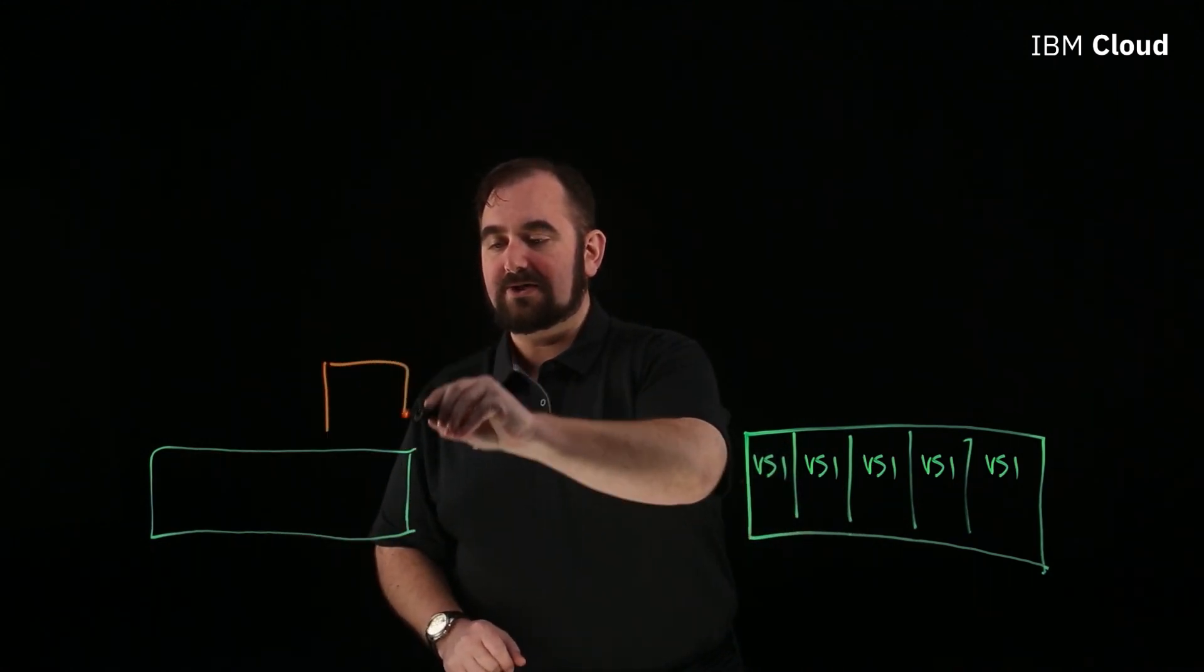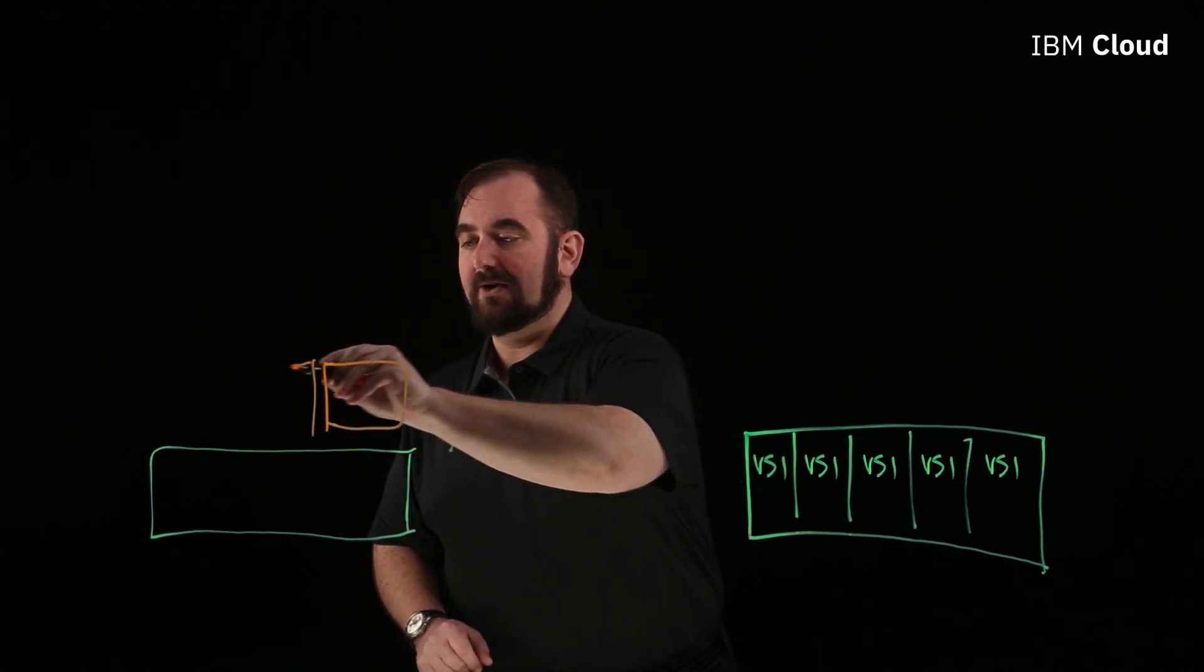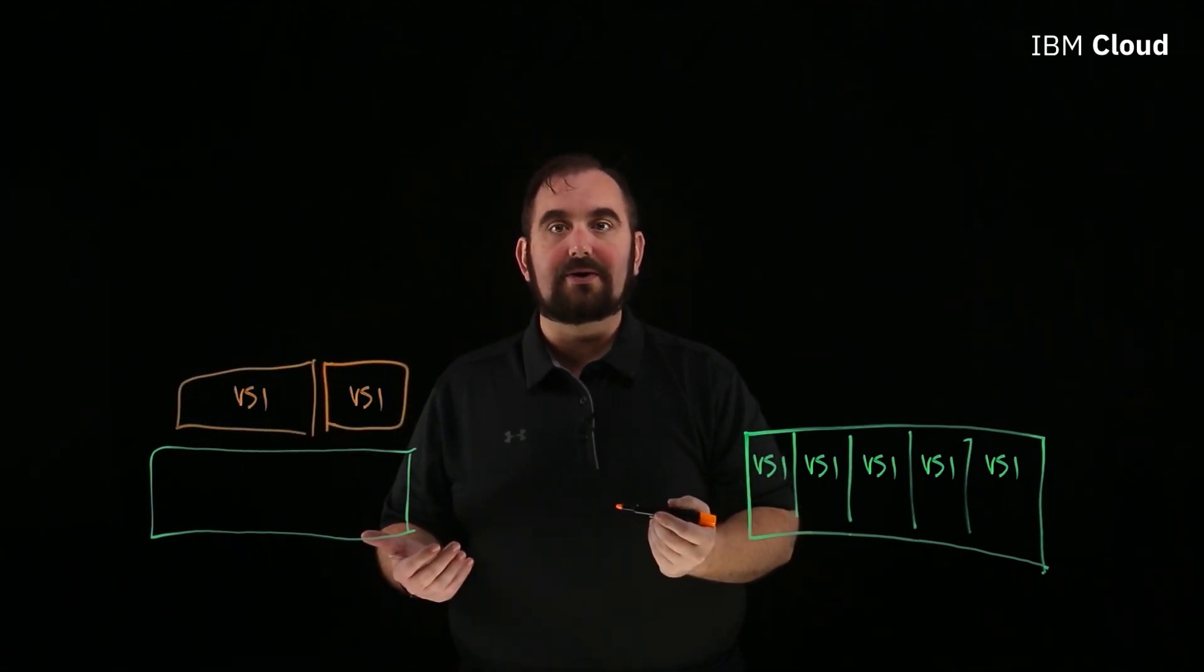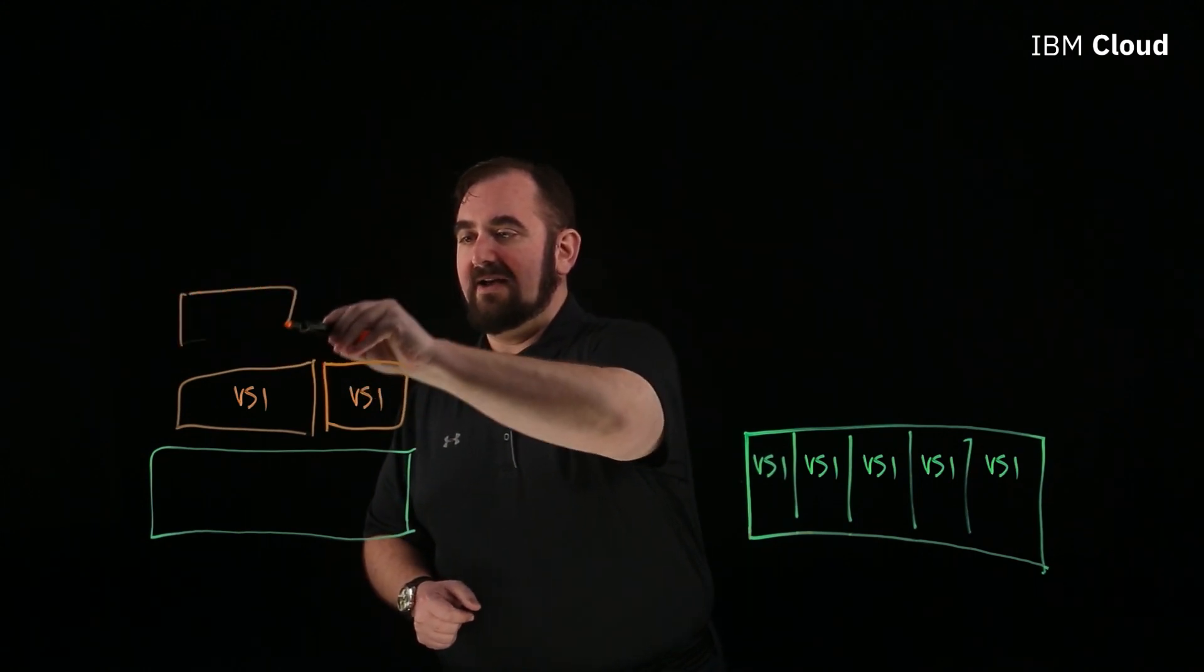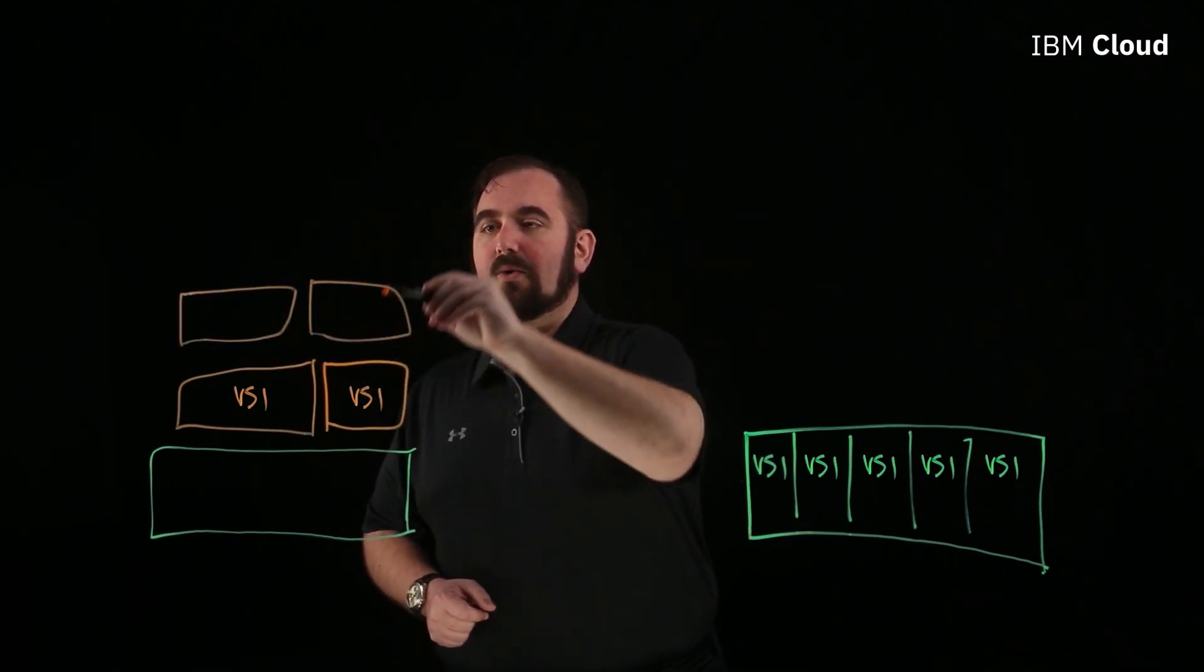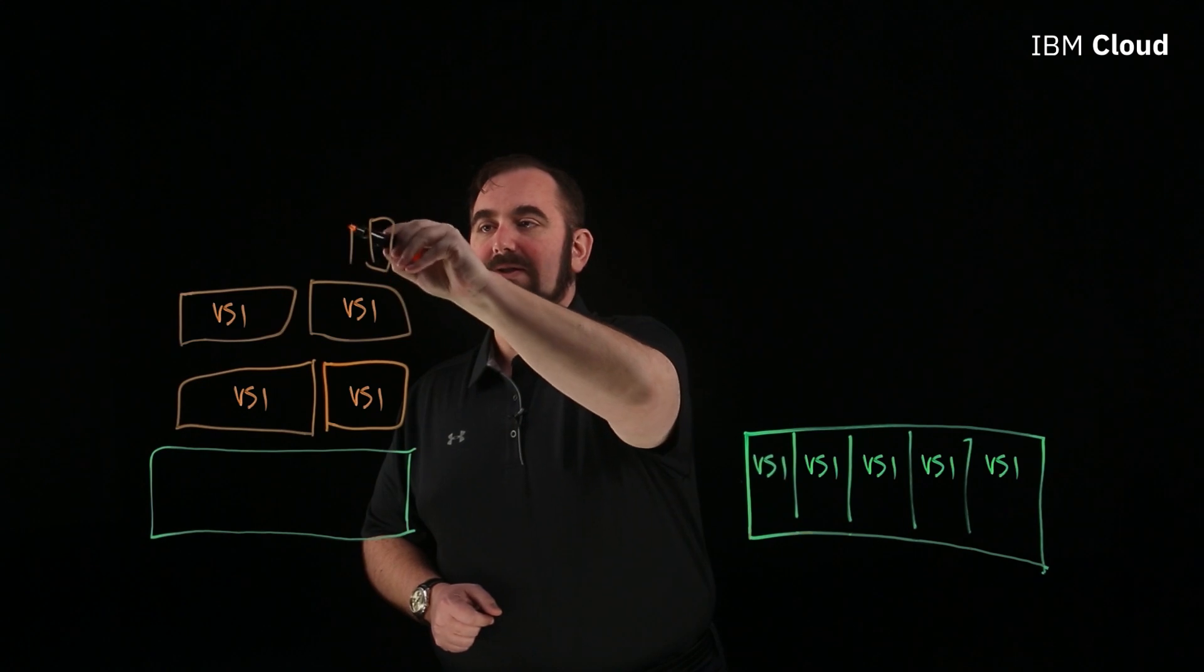And so you can choose to divide it up however you want. You can have one third of it go into one VSI and two thirds go into another. You can divide it half and half, or you can put lots of little bitty ones on it.